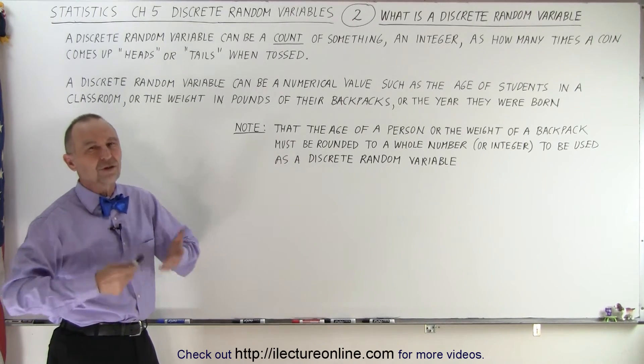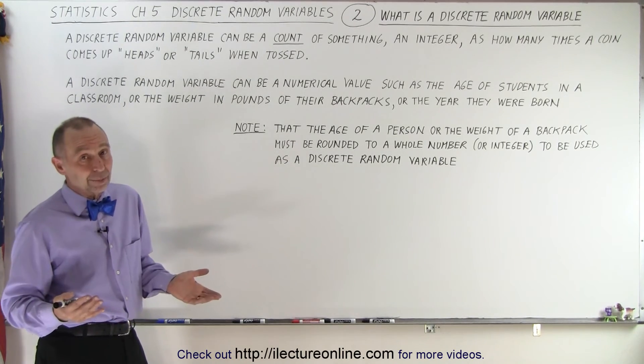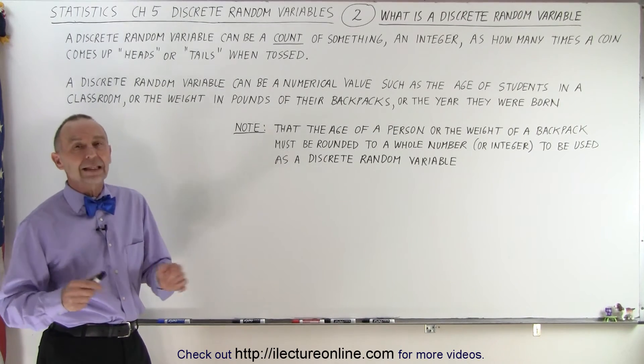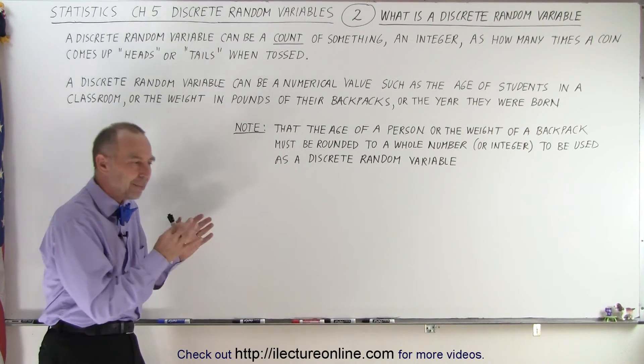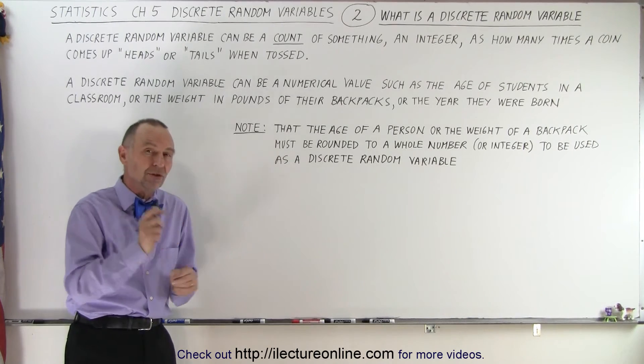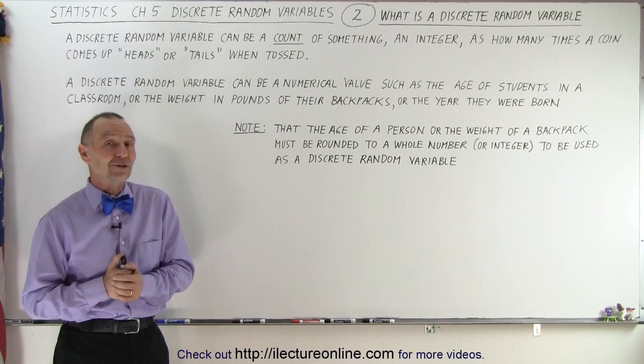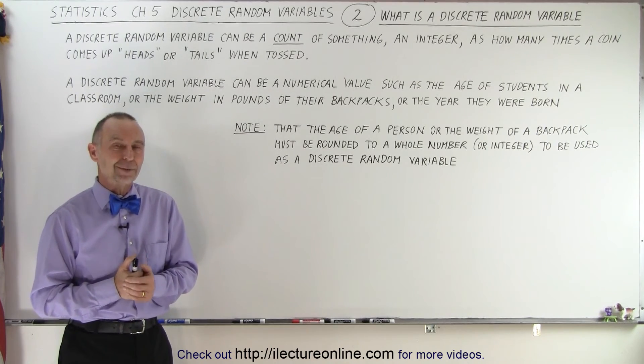It's still a random variable, but not a discrete one because it can be almost anything at that point. But if we have a sample space with just integers and whole numbers, now we're talking about a discrete random variable. And that is the definition of a discrete random variable.